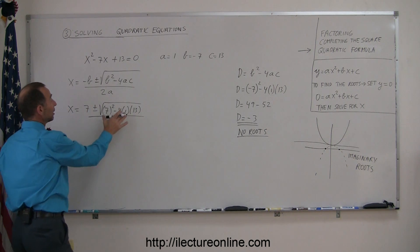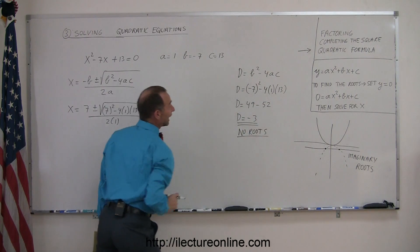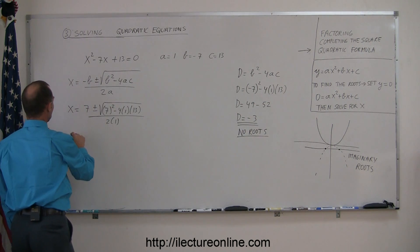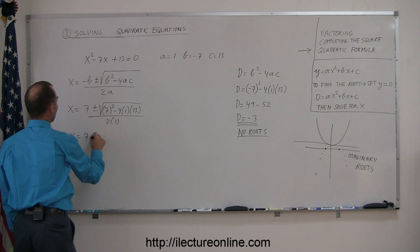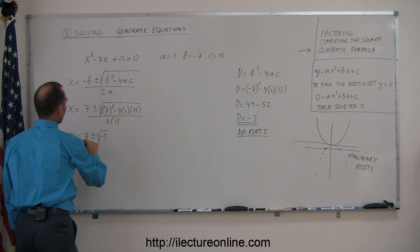Remember that what's underneath the radical is the same as what we had over here, which is going to be negative 3. So this becomes x is equal to 7 plus or minus the square root of negative 3 over 2.